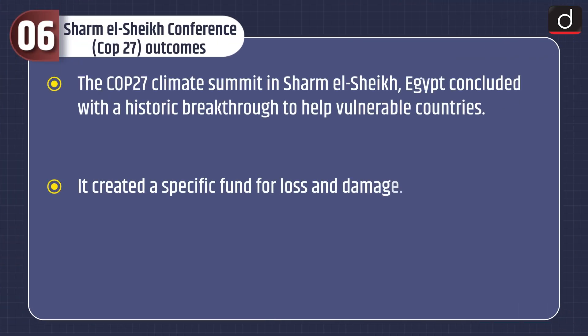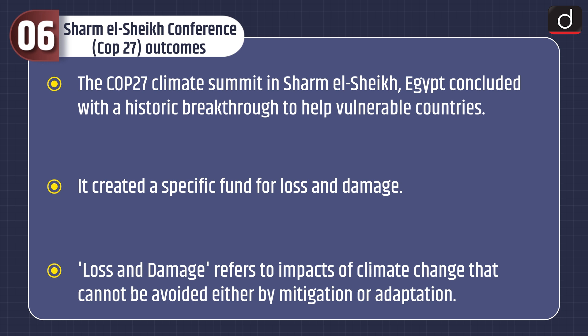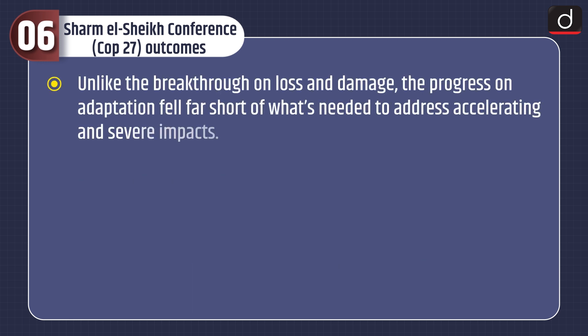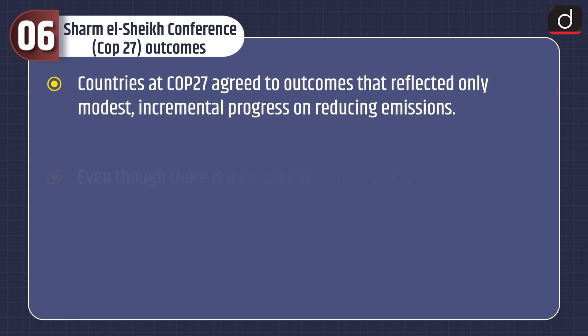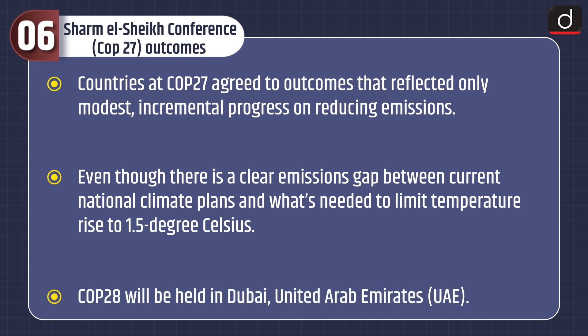Now the Sharm El Sheikh Conference, COP27 outcomes. The COP27 climate summit in Sharm El Sheikh, Egypt, concluded with a historic breakthrough to help vulnerable countries — it created a specific fund for loss and damage. Loss and damage refers to impacts of climate change that cannot be avoided either by mitigation or adaptation. Unlike this breakthrough, progress on adaptation fell far short of what's needed. Climate finance took center stage: the COP27 decision reflects developing countries' serious concern that developed countries' commitment to provide $100 billion annually has still not been met. Countries agreed to only modest incremental progress on reducing emissions, despite a clear emissions gap between current national climate plans and what's needed to limit temperature rise to 1.5 degrees Celsius.